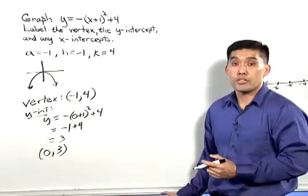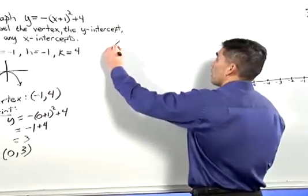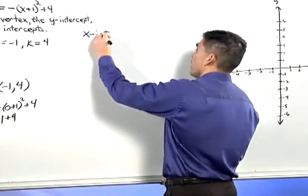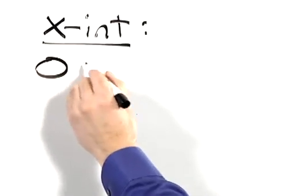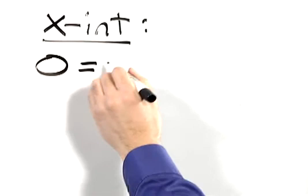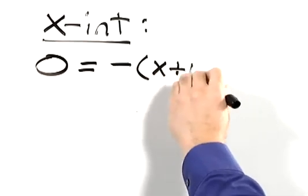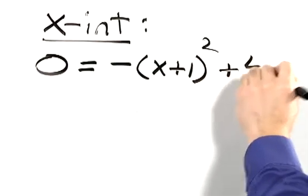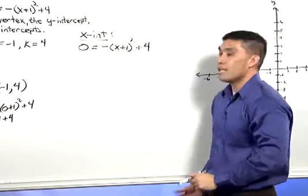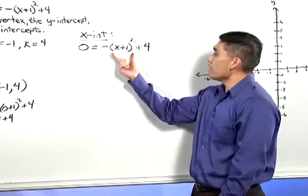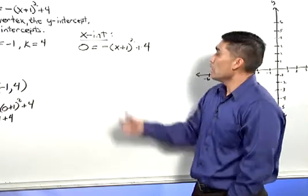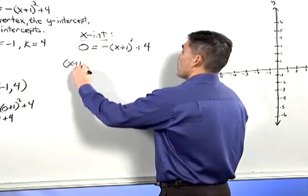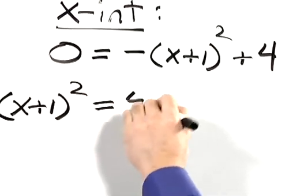Let's now move on to the x-intercept. To find the x-intercept, we're going to let y equal 0. 0 equals negative x plus 1 squared plus 4. Let's add this variable term to both sides of the equation. In doing so, we end up with x plus 1 squared equals 4.